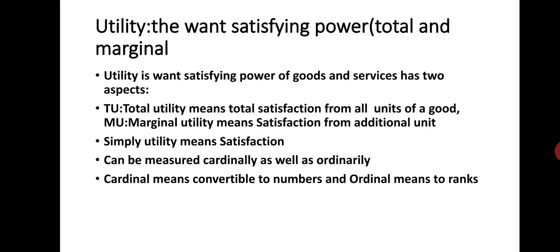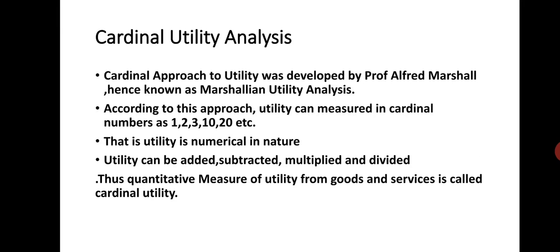Utility has two aspects: one is cardinal and one is ordinal. When we talk of cardinal, we talk of quantity; and when we talk of ordinal, we talk of ranks — that is order, first, second, third, like first division, second division. So cardinal means numbers — addition, subtraction — cardinal means 1, 2, 3, 4, 10, 20 and so on.